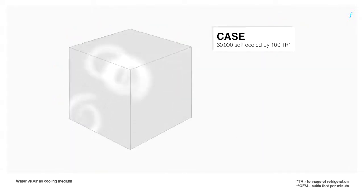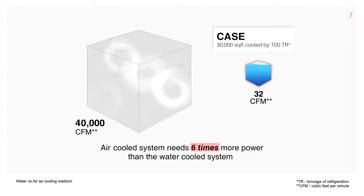Sample this to provide 100 TR or tons of refrigeration worth of cooling. One would need 40,000 CFM of air compared to just 32 CFM of water. Moreover, the air cool system would need 6 times more power than the water cool system for just pumping.